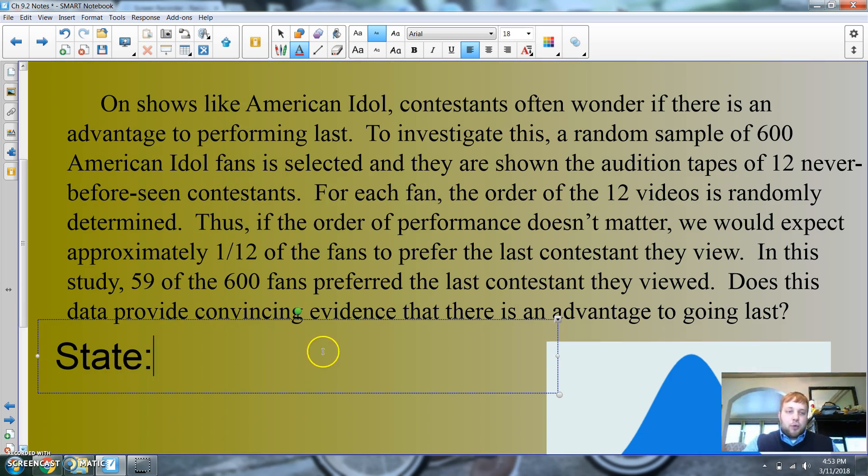Thus, if the order of performance doesn't matter, we should expect approximately 1/12th. Alright, so state our hypothesis. In this study, 59 out of 600 fans prefer the last contestant they viewed. Does this data provide convincing evidence? Usually when it says does this data provide convincing evidence, there's an advantage to go last. That means you need to do a test.